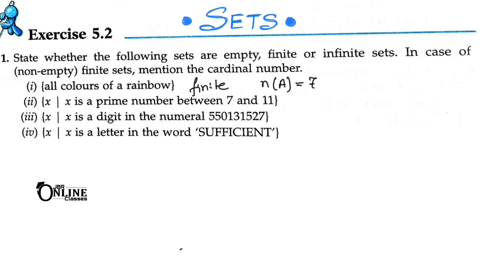Next one: x is a prime number between seven and eleven. In between seven and eleven you have eight, nine, and ten, but eight, nine, and ten are all composite numbers. That means there are no prime numbers between seven and eleven, so it is an empty set.